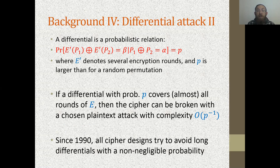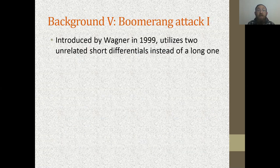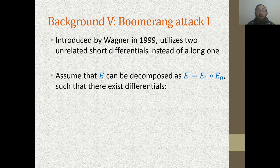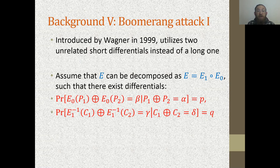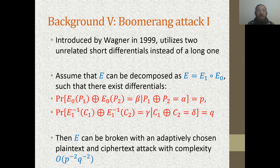Since this attack appeared, all cipher designs try to avoid long differentials with non-negligible probability. This seems to be sufficient, but 10 years later, Wagner in 1999 showed that if instead of one long differential we have two short differentials — one for the first half and one for the second half of the cipher — then we can combine them into an attack on the entire cipher. Formally, if E decomposes as E0 then E1, with alpha→beta through E0 with probability p, and gamma→delta through E1 with probability q, then E can be broken with an adaptively chosen plaintext and ciphertext attack with complexity 1/(p²q²).